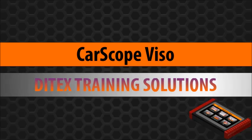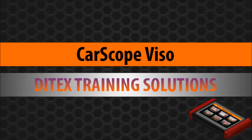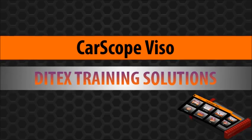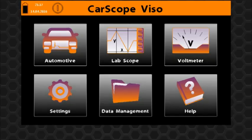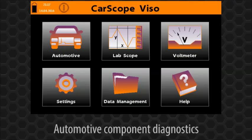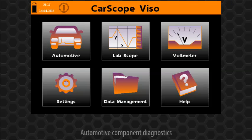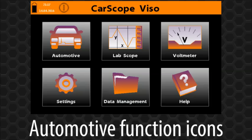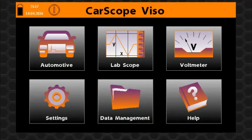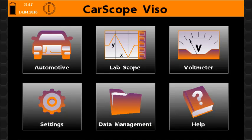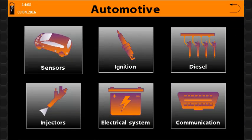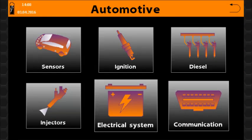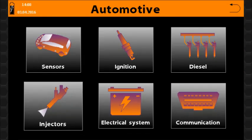Welcome to Ditec's training solutions. This training module is designed to help you in using CarScope Viso in automotive component diagnostics and covers the automotive function icons and their functions. The automotive function icon opens a panel that includes function icons with automotive component test operation groups.